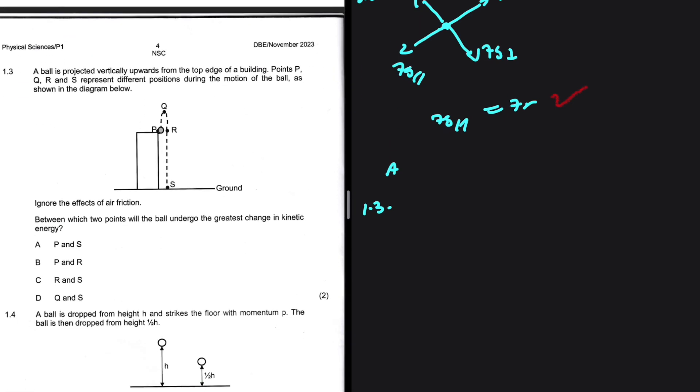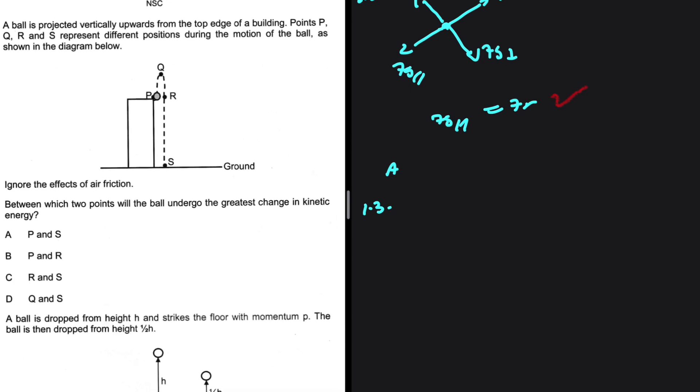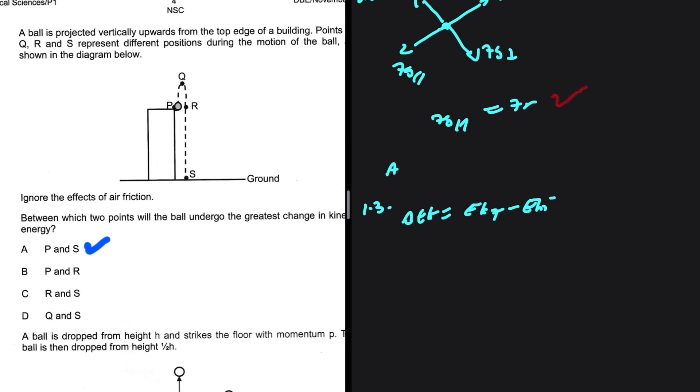1.3: A ball is projected vertically upwards from the top edge of a building. Points P, Q, R, and S represent different positions during the motion of the ball as shown in the diagram below. Ignore the effects of air resistance. Between which two points will the ball undergo the greatest change in kinetic energy? The change in kinetic energy is Ek final minus Ek initial. Let's take a look at our situations. We have P and S as one of the possible options. At S we have some vs, and at P we have some vp.